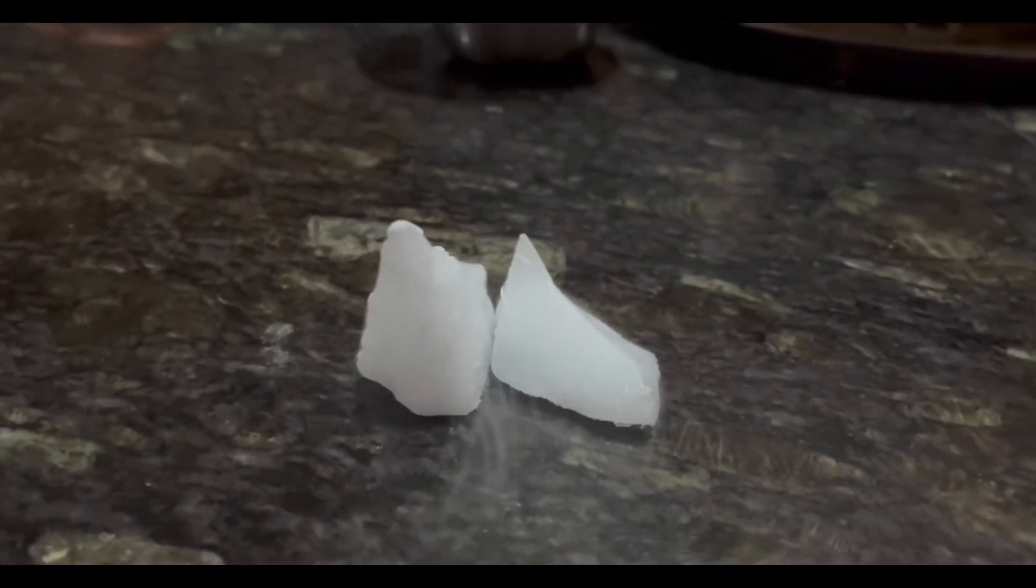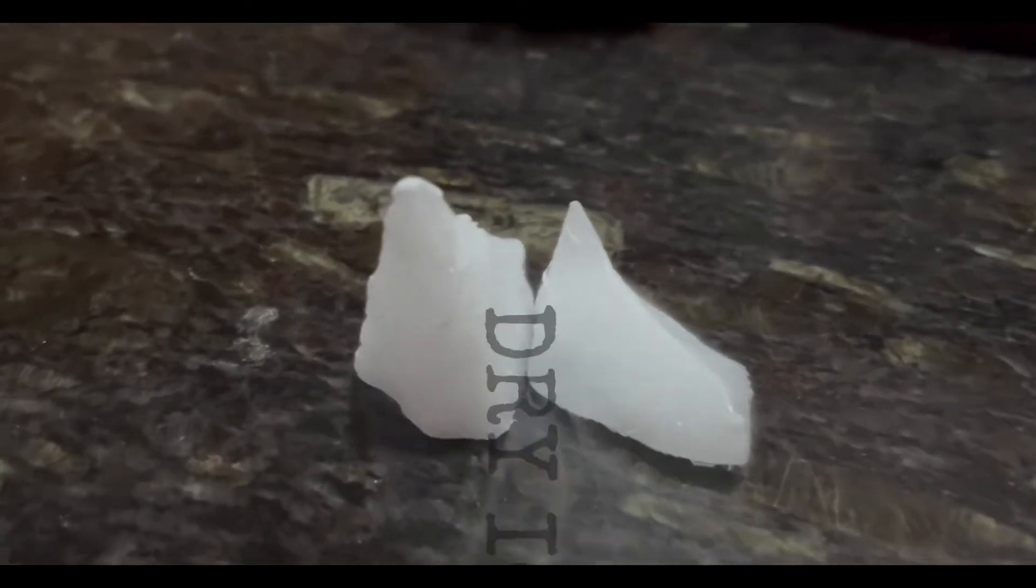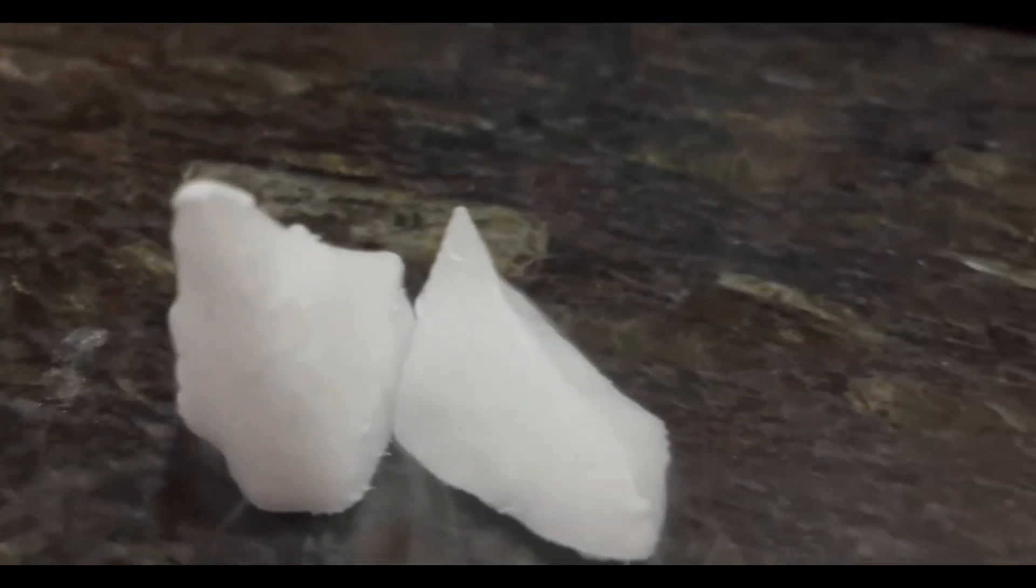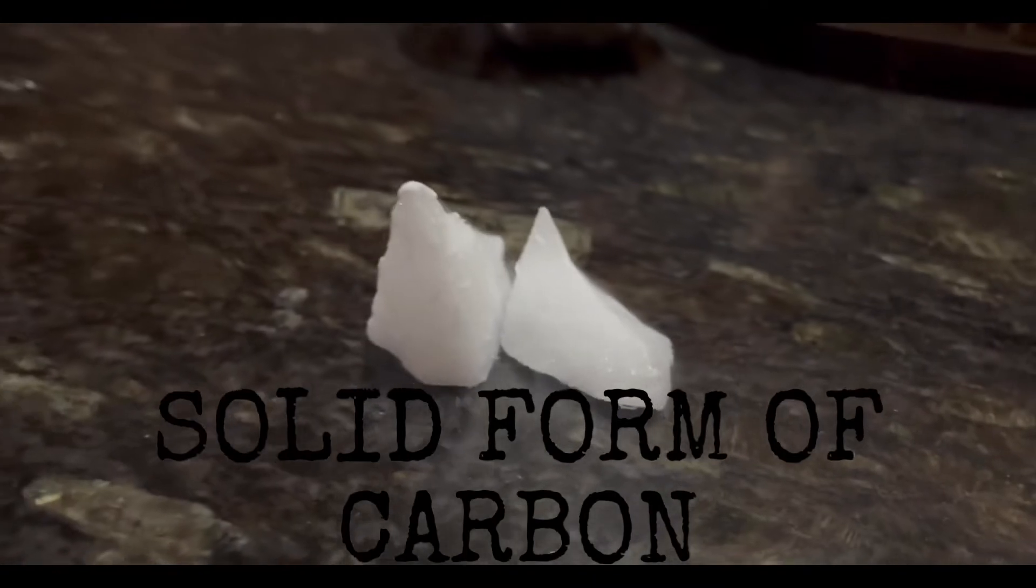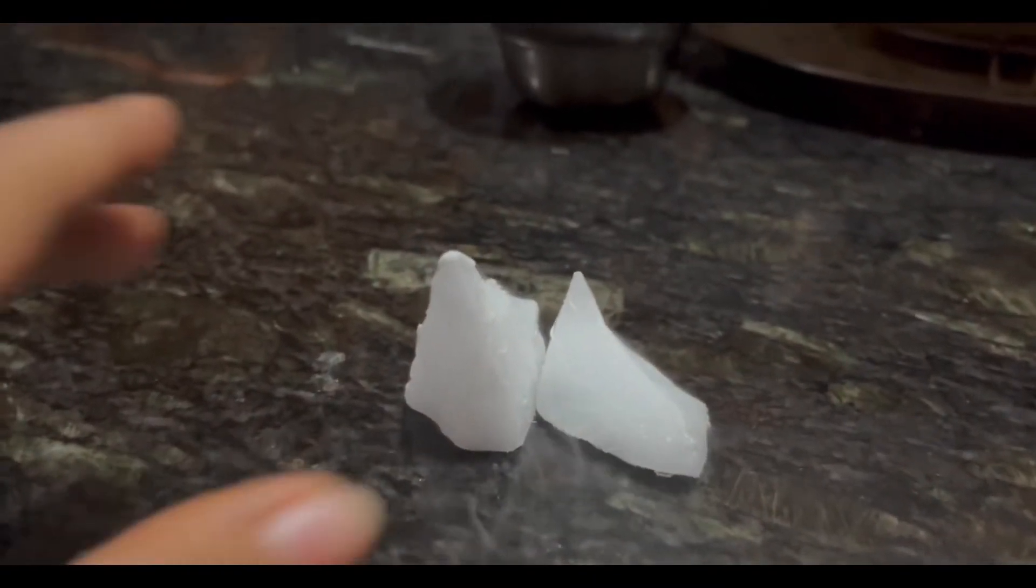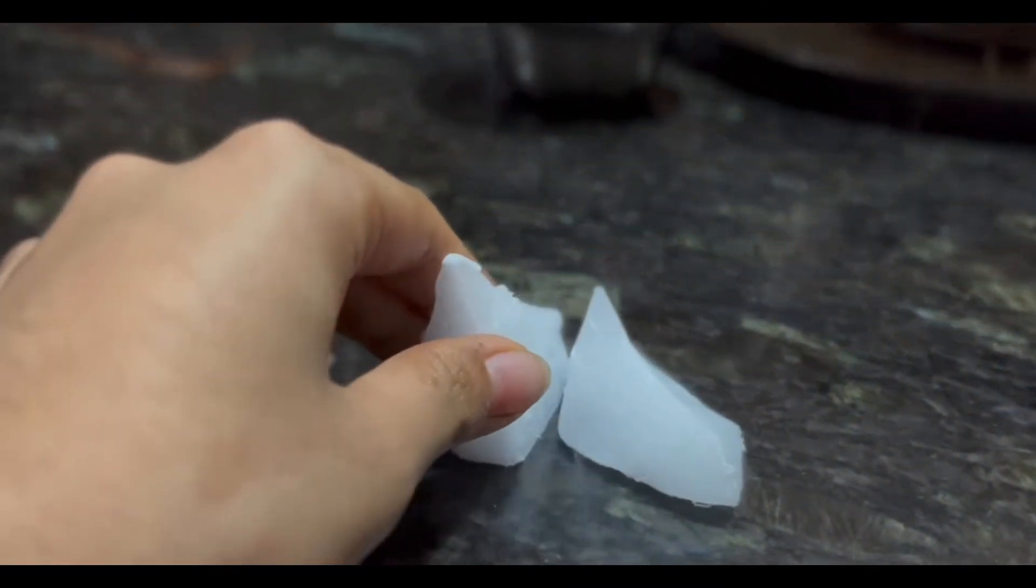You see this material right here? This, my friends, is known as dry ice. Dry ice is the solid form of the element carbon, which is the sixth element in the periodic table.